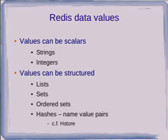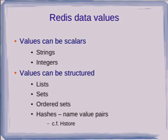Values can also be structured. These are the four structures they support: they have lists of things, unordered sets of things, ordered sets of things — and these are actually scored data, so you can insert a value along with some score and the ordering is according to the score and you can get back that score. And the last thing they have is a single value that can consist of a set of name-value pairs, somewhat like an HStore.